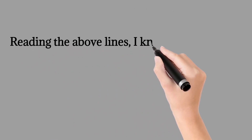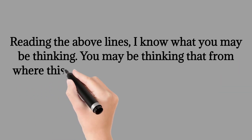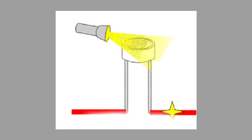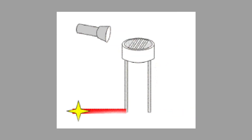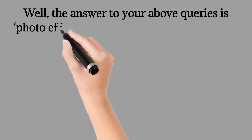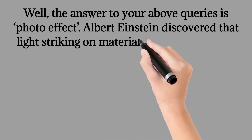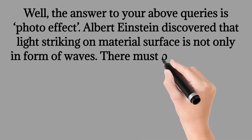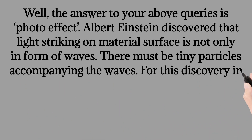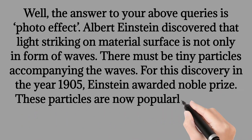You may be thinking: from where does this energy come — how does light simply give energy? The answer is the photo effect. Albert Einstein discovered that light striking on a material surface is not only in the form of waves; there must be tiny particles accompanying the waves. For this discovery in the year 1905, Einstein was awarded the Nobel Prize. These particles are now popularly known as photons.